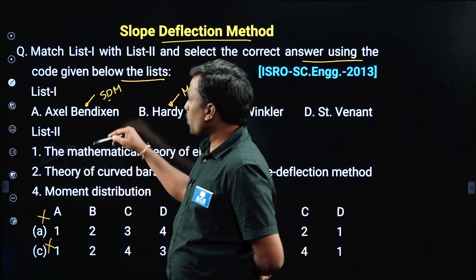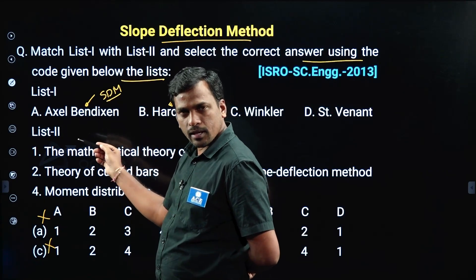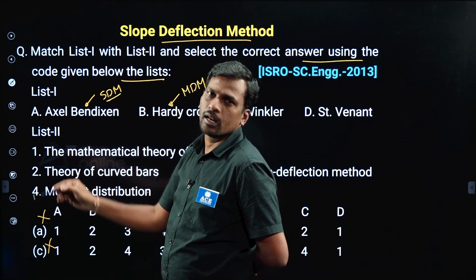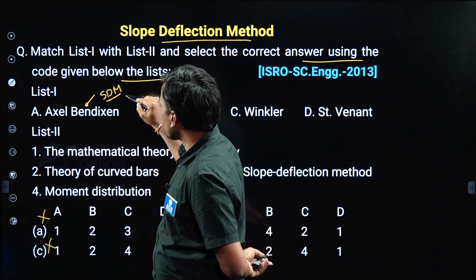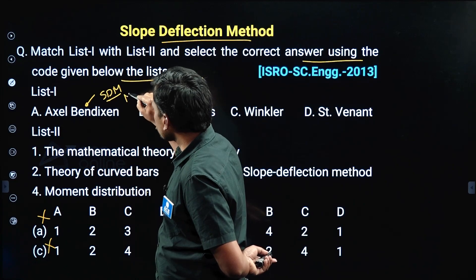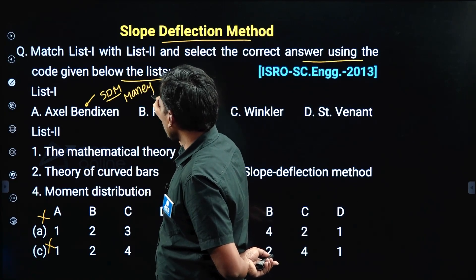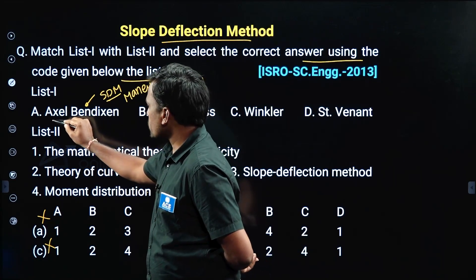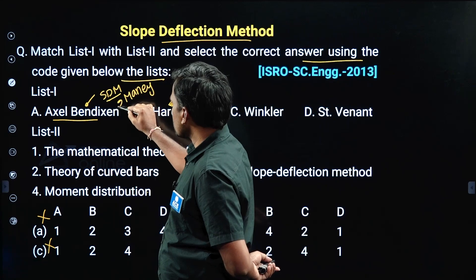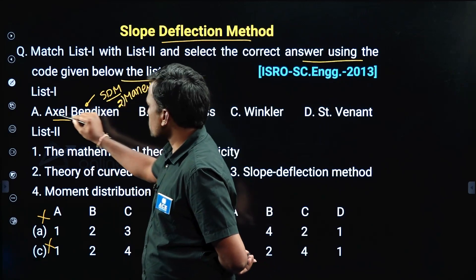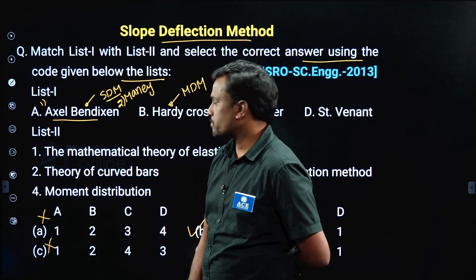One more person modified this method with additional information — that is Maney. This is the first person and this is the second person who developed the slope deflection method.